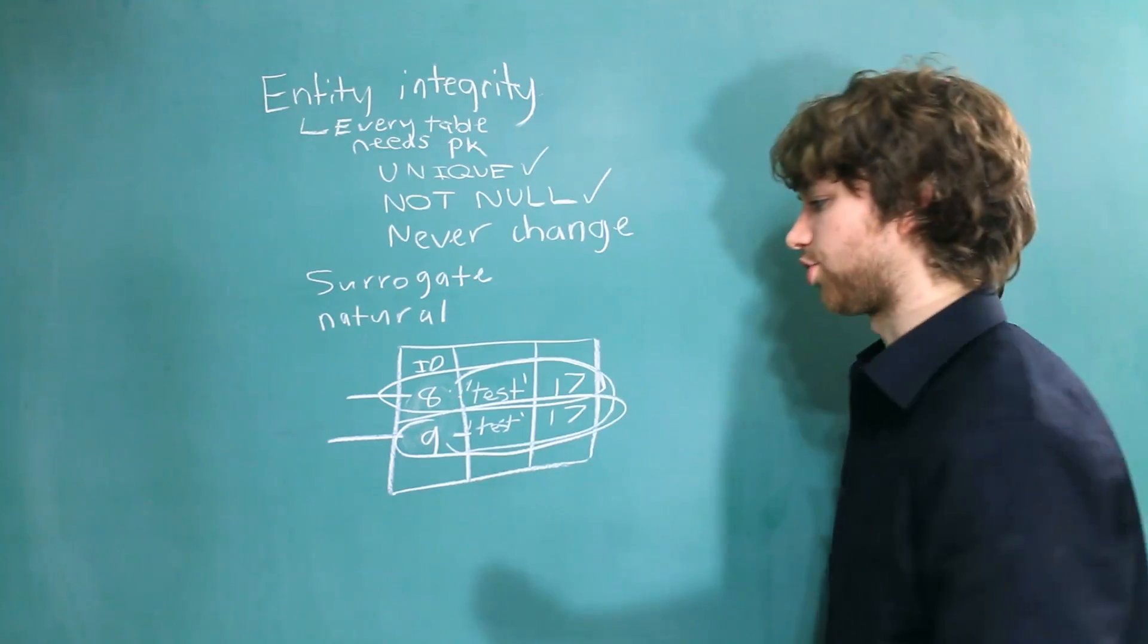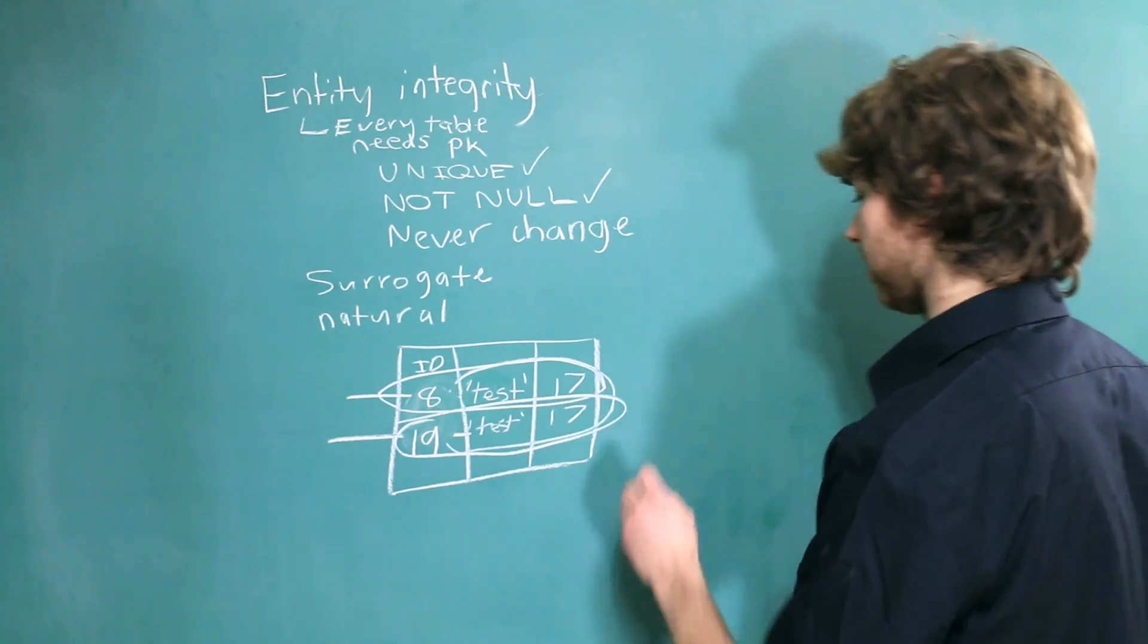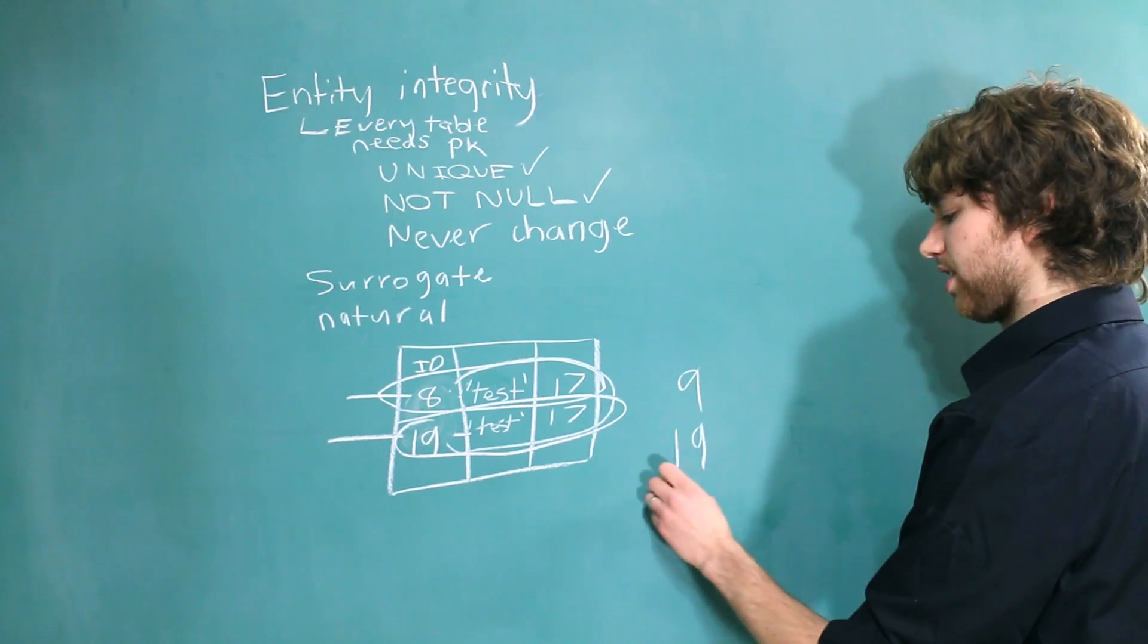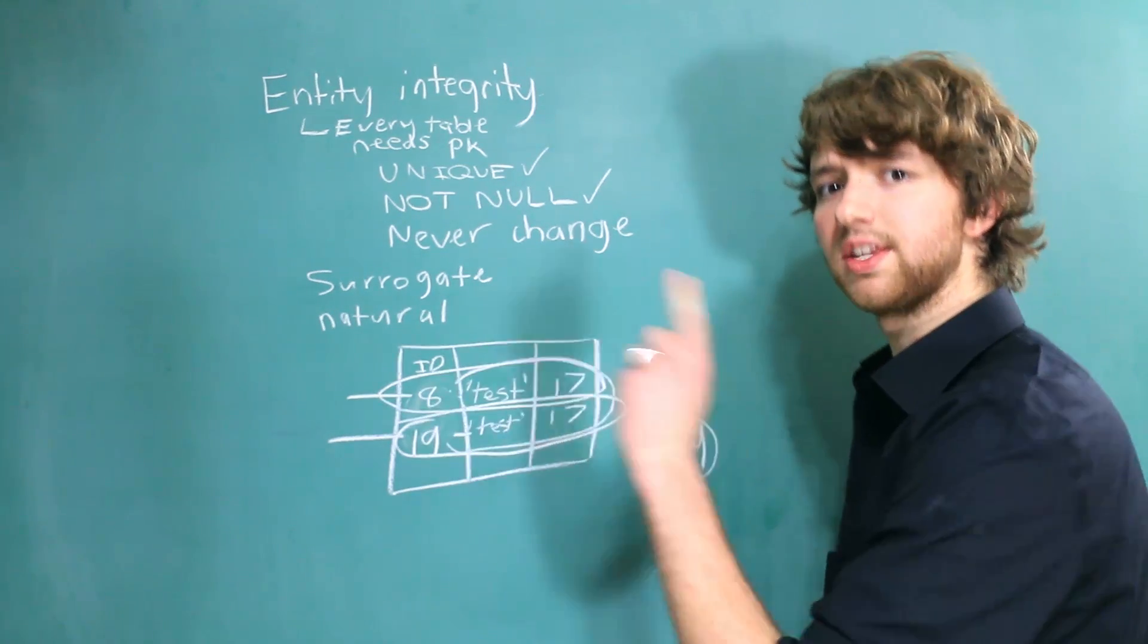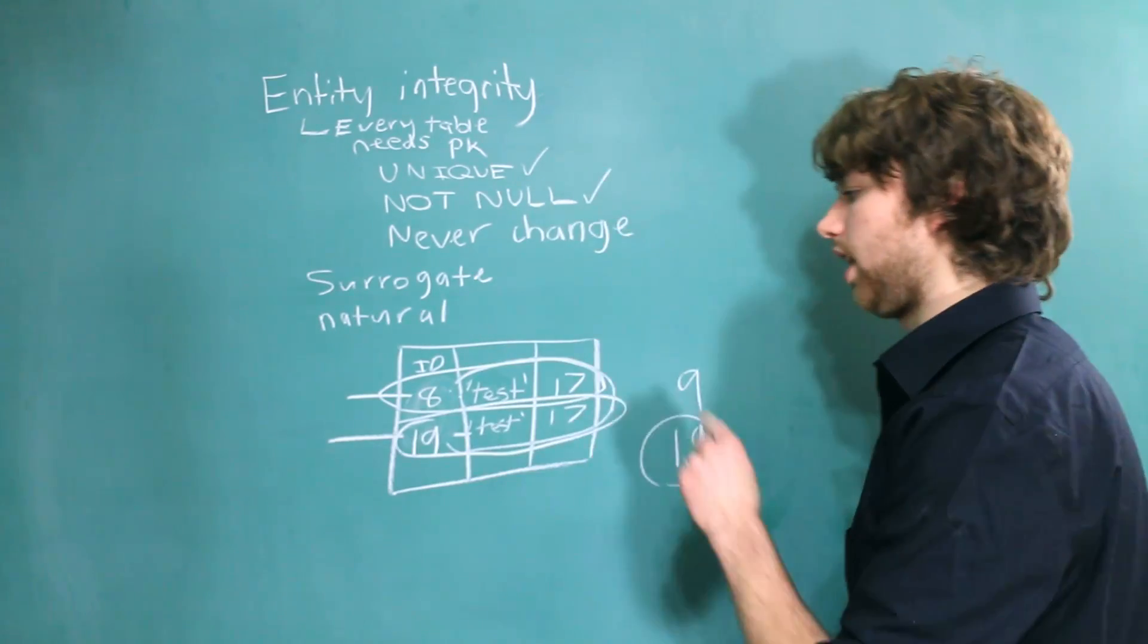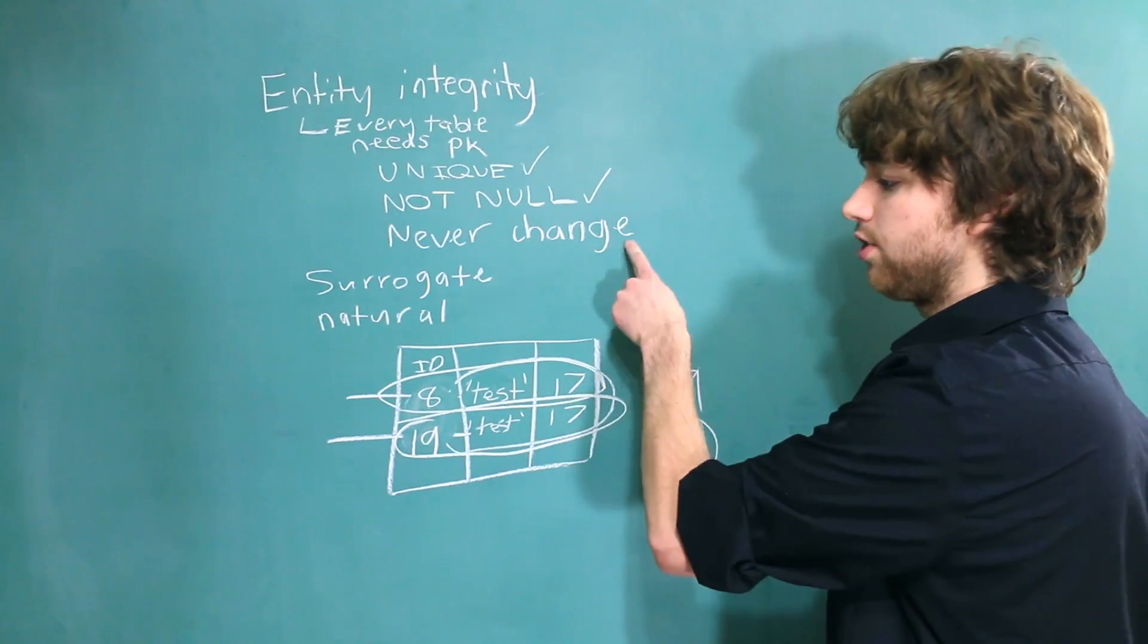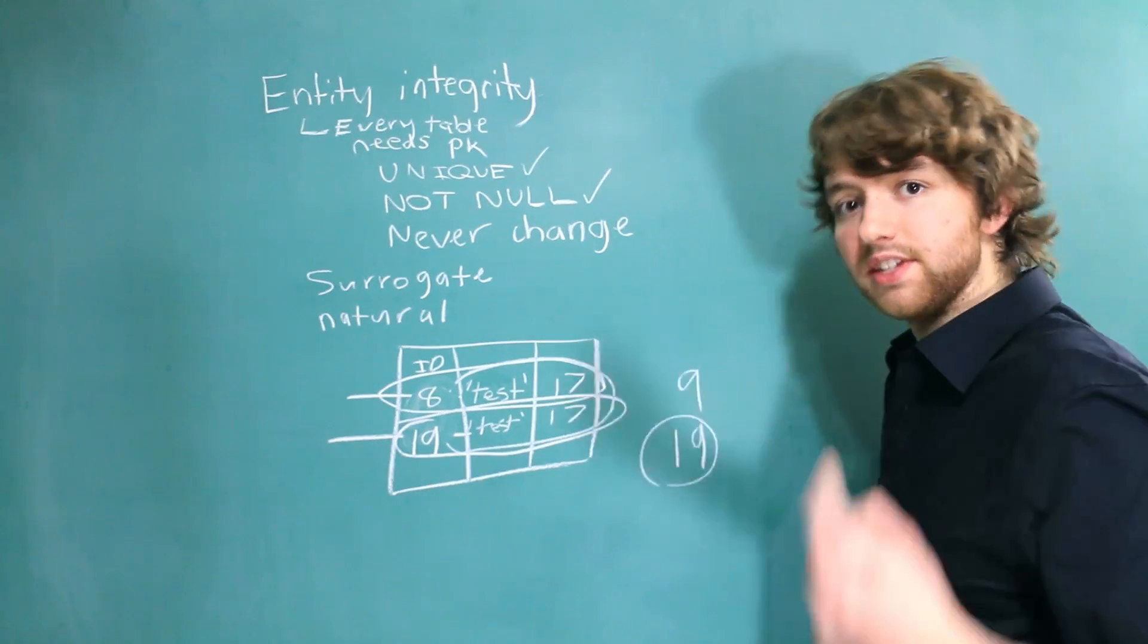Let's see what would happen if it did change. Let's say this changed to 19. Now we're confused because it was nine and now it's 19. So does this 19 refer to a new entity or the same entity with a new ID? It's confusing. If we were following the rules of primary keys and that they never change, I would assume that it's a new entity.